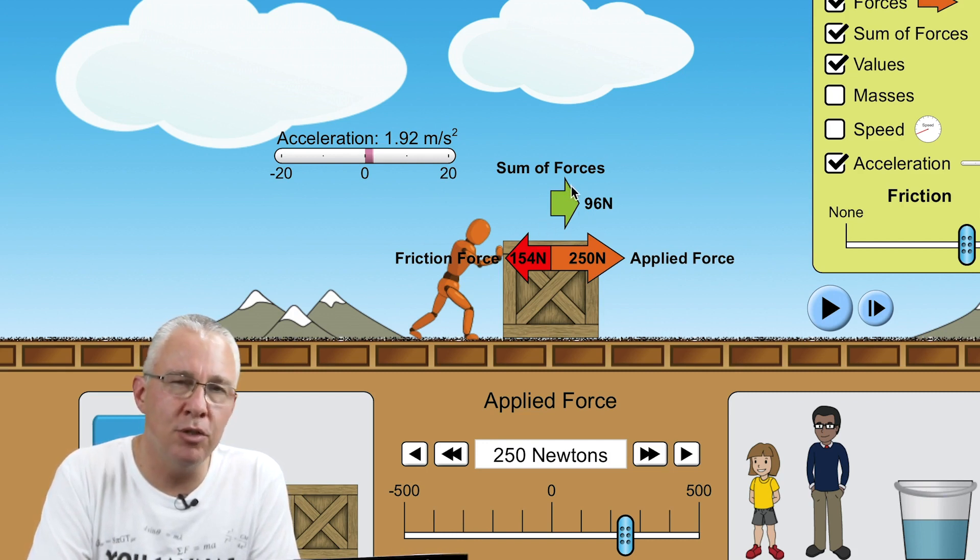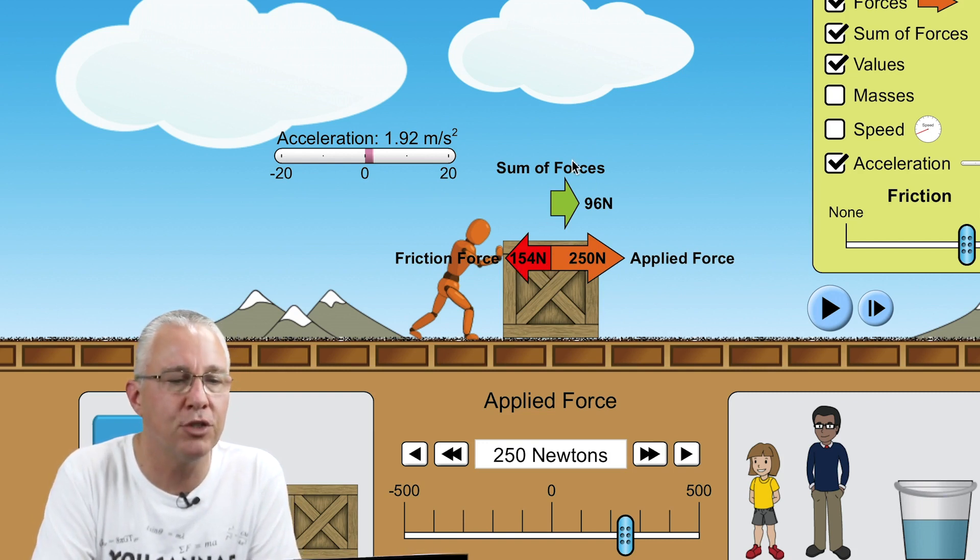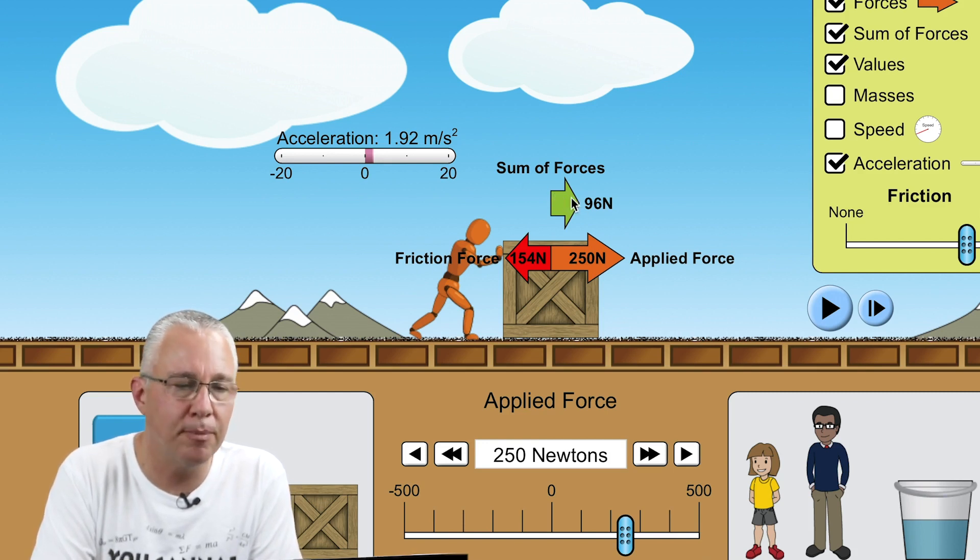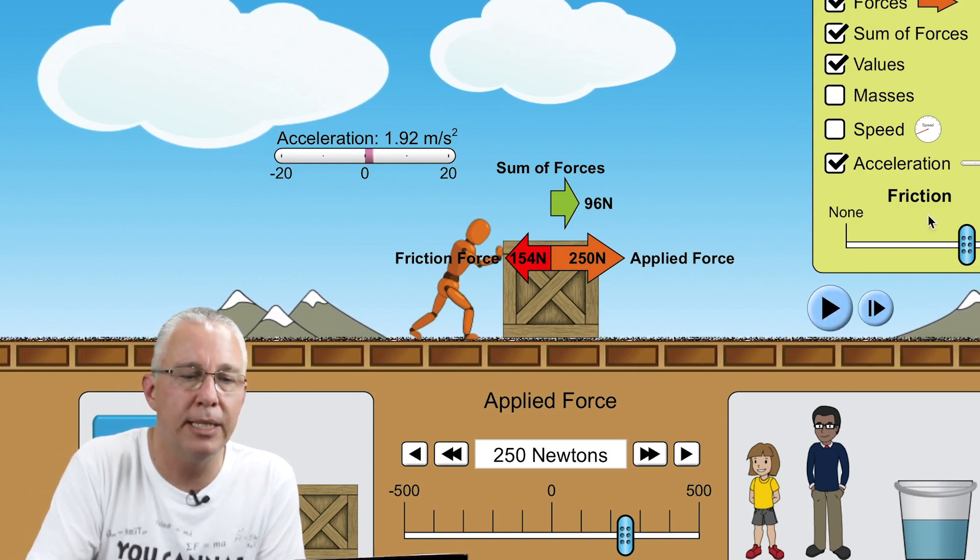So first of all understand that Newton's Second Law is not about forces themselves, it's about the sum total of the forces. So in this case we have a net force. We have 250 in the forward direction, 154 in the reverse direction. The net is 96 newtons. In other words, there is an unequalness between the forces that are applied. 96 newtons, and in this case the animation says it's going to travel at 1.92 meters per second squared.